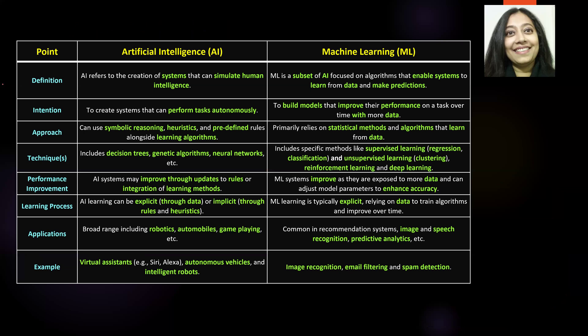The first point is the definition. By definition, AI refers to the creation of systems that simulate human intelligence. Remember, the word intelligence comes from human intelligence, and since it is man-made, it is artificial intelligence. Machine learning, or ML, is a subset of AI that focuses on algorithms that enable systems to learn from data and make predictions. The first key point to understand is that ML is a subset of AI.